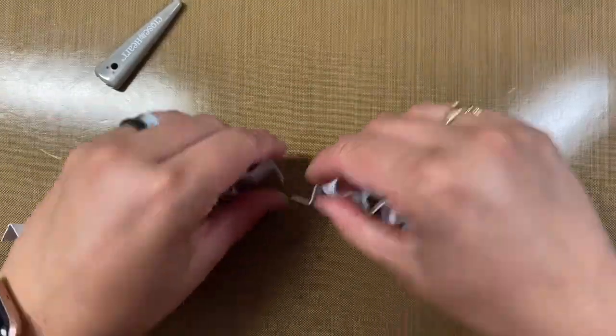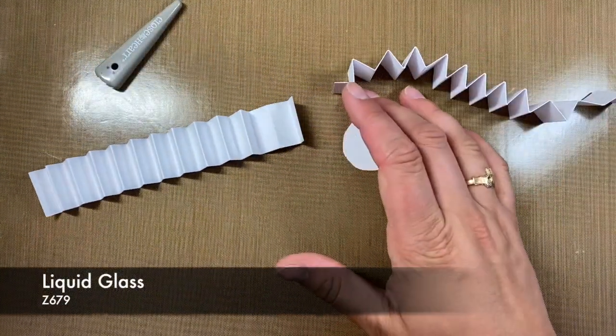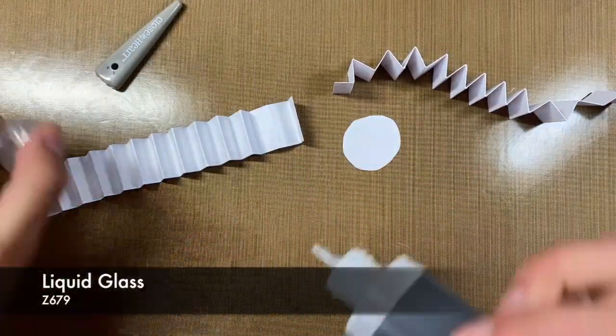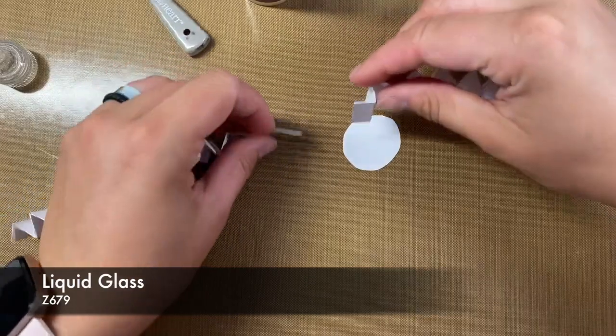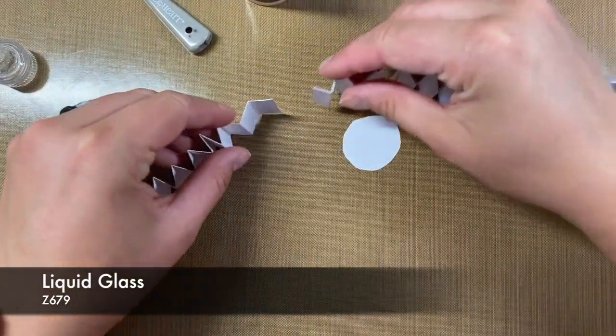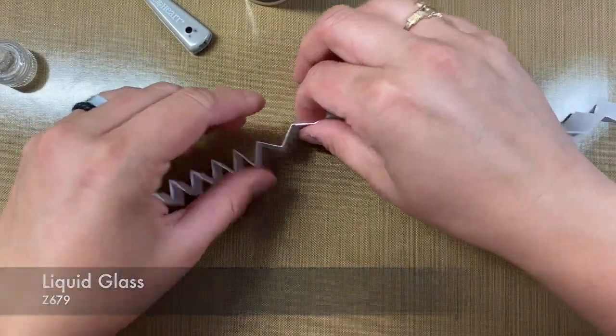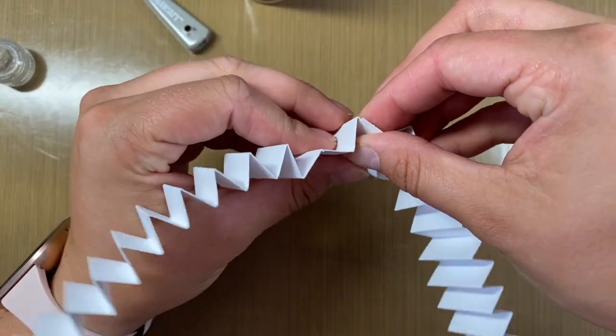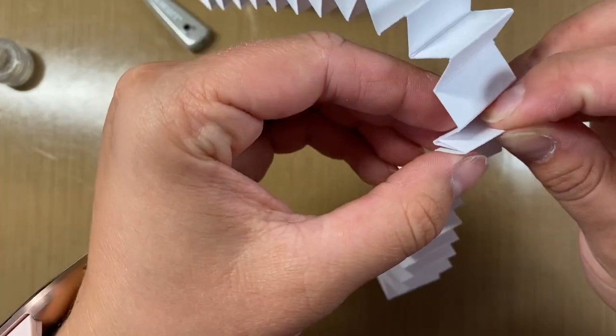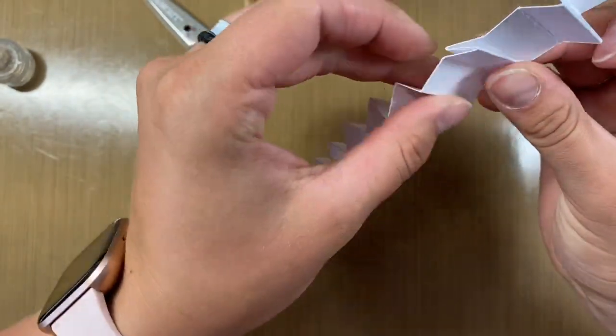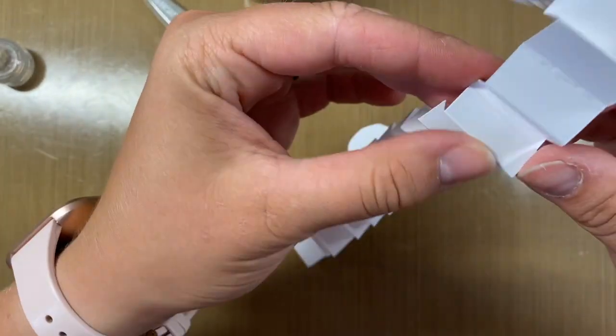Now what I'm going to do is I'm going to take some liquid glass because liquid glass is going to be your best friend here and I'm just going to put a little bit of liquid glass on this end and these two are going to actually interfold into each other just like that. See how I just kind of put those together? So it's basically going to make a continuation of that fold but connecting our two pieces together.